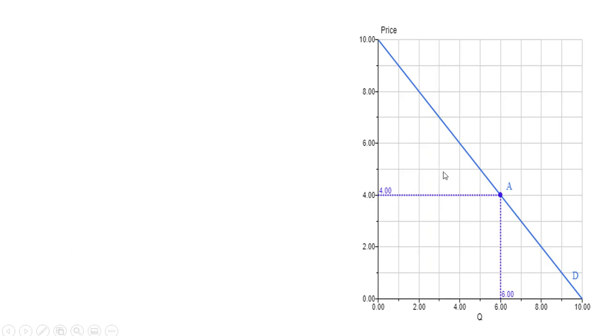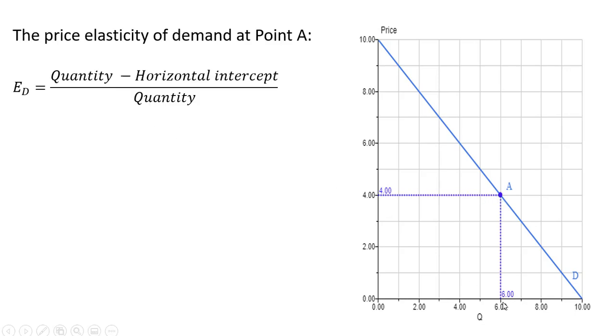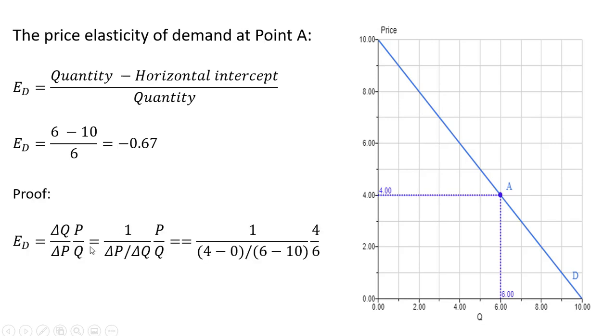Let's calculate the price elasticity of demand at a different point along the same demand curve. It's going to be the quantity minus the horizontal intercept, all divided by the quantity again. We get minus 0.67, and we can do the proof of that to get the same answer.